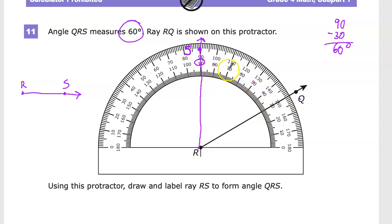It's 10, 20, 30, 40, 50, 60 degrees. And it has all the parts that I need. And I labeled Ray R, S.